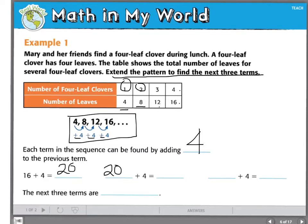Sixteen plus four is twenty. Twenty plus four would be twenty-four. And if we add on four from there, twenty-four plus four is twenty-eight. So the next three terms are twenty, twenty-four, and twenty-eight.